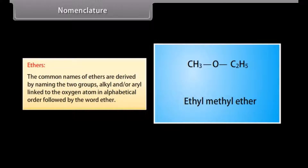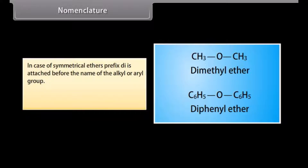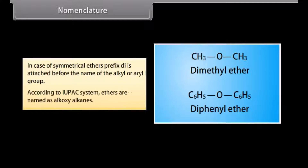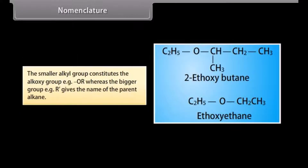Nomenclature of ethers. Common names of ethers are derived by naming the two alkyl and/or aryl groups linked to the oxygen atom in alphabetical order, followed by the word 'ether.' For symmetrical ethers, the prefix 'di' is attached before the name of the alkyl or aryl group. According to the IUPAC system, ethers are named as alkoxy alkanes — the smaller alkyl group constitutes the alkoxy group (e.g., OR), while the larger group (R') gives the name of the parent alkane.